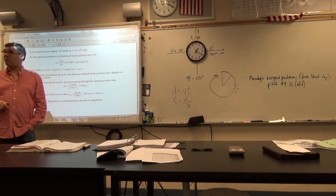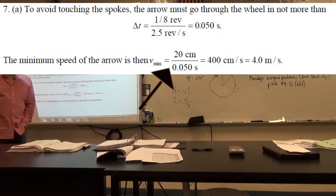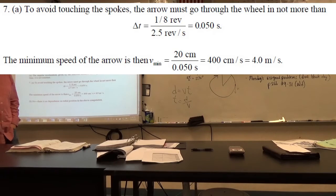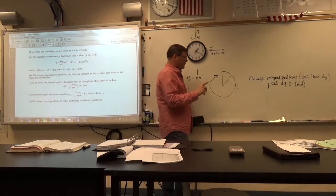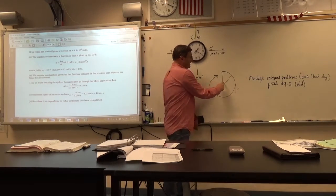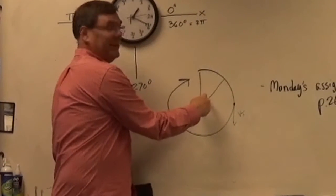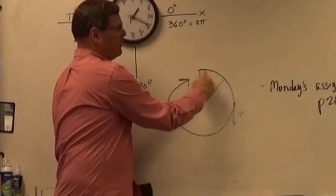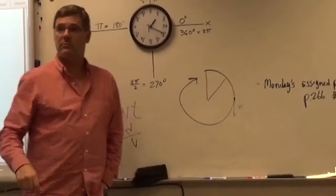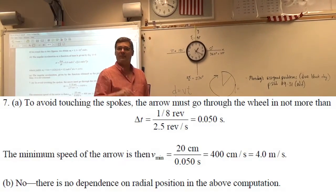So I have 0.05 seconds to get that arrow through the wedge. The length of the arrow divided by that time gives me the speed — that comes out to four meters per second. Now the book asks: would it be easier to get the arrow through near the center, or near the edge where there's more room?